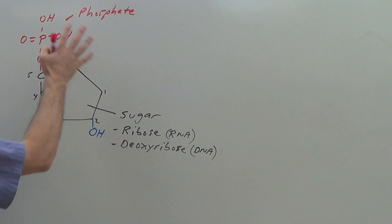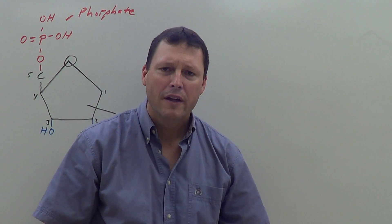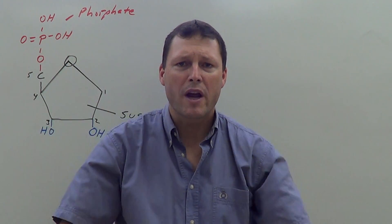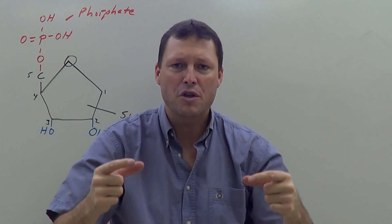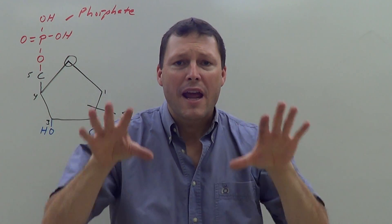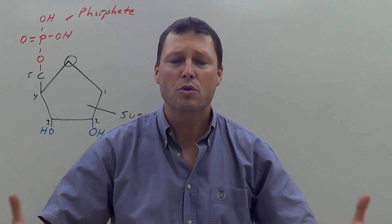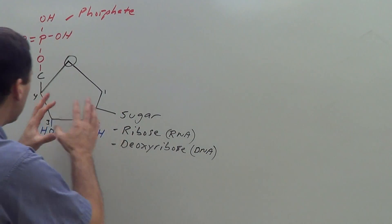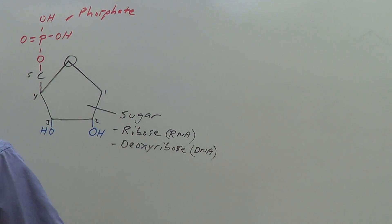The sugar and the phosphate are both very polar, very hydrophilic molecules. In double-stranded DNA, the sugar and phosphate form a sugar-phosphate backbone. That backbone interacts with the nucleoplasm — specifically with the water in the nucleoplasm — because water is hydrophilic and the sugar-phosphate backbone is hydrophilic as well.